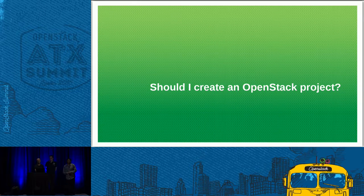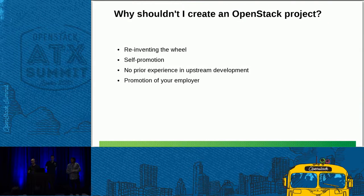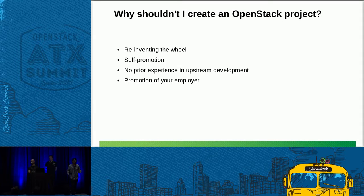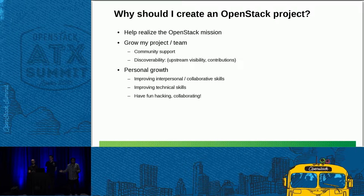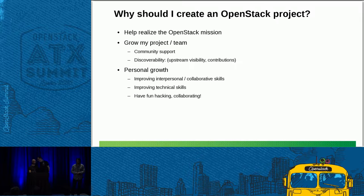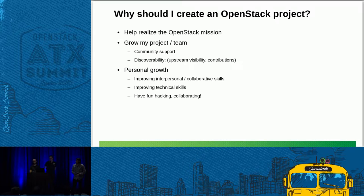The first thing to consider is why you should NOT create an OpenStack project. If you want to promote yourself, promote your employer, or create competition between two projects, it doesn't make sense. Reinventing the wheel is probably not ideal. In orchestration, we have Puppet, Chef, and Ansible solving the same problem, and that makes sense. But it doesn't make sense to create another networking project when we have something as amazing as Neutron.